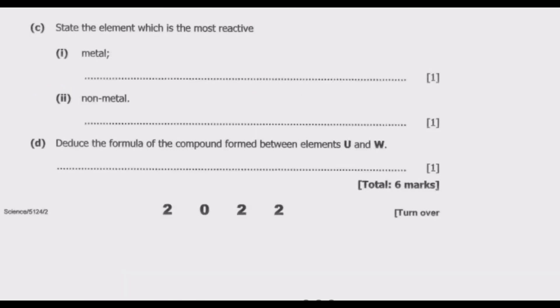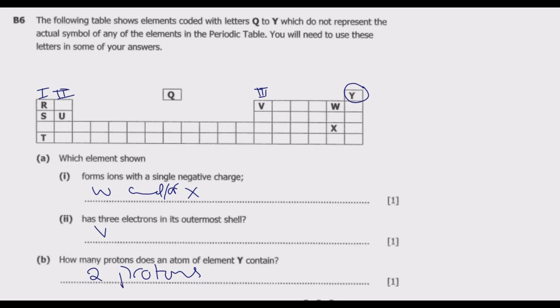Question C: State the element which is the most reactive. Part (i): metal. So among these, what you notice in this case is the reactivity of metals increases as you move down the period.